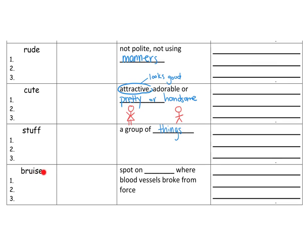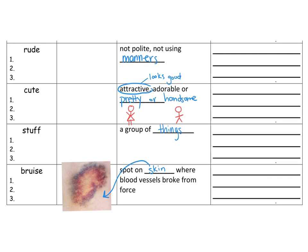Our last word is bruise. Here is a close-up picture of a bruise. When you run into something or bump into something, it might leave a bruise on your arm or your leg. If somebody hits you, you get a bruise. A black eye is also a bruise. A bruise is a spot on the skin where blood vessels broke from force — something hit the person and broke all the blood vessels underneath their skin, leaving blood underneath. That is why there is a bruise, and why it hurts to touch, because it's trying to heal itself.